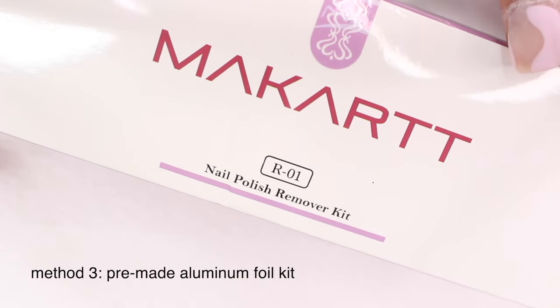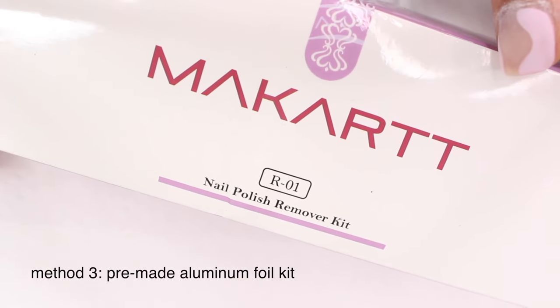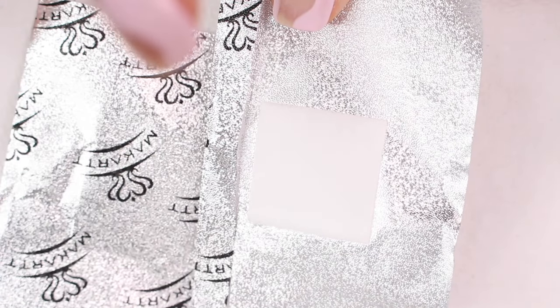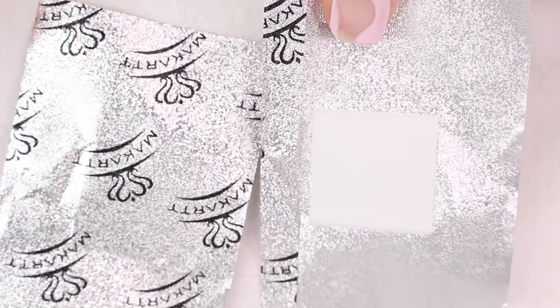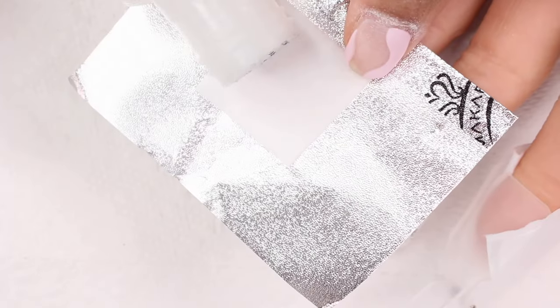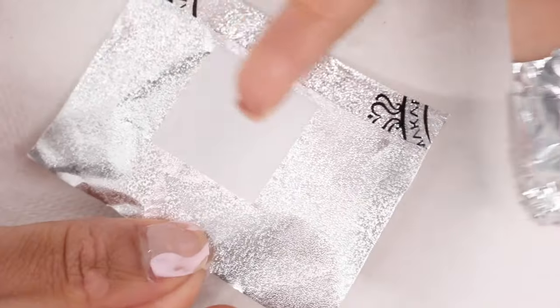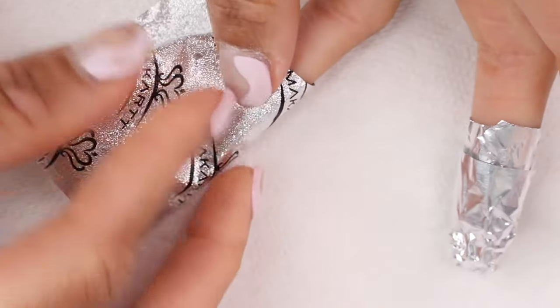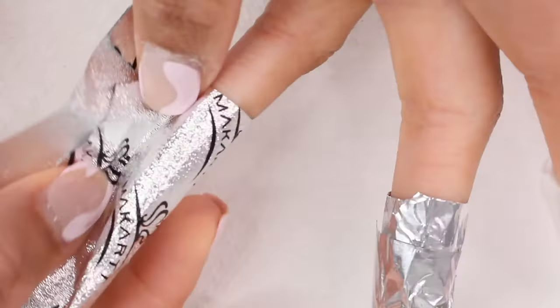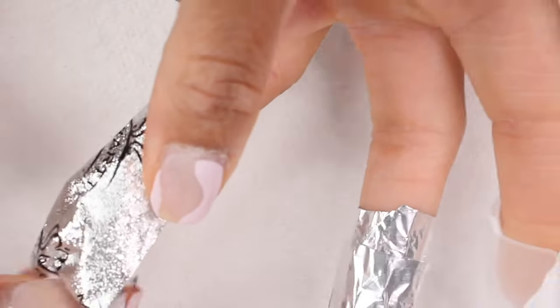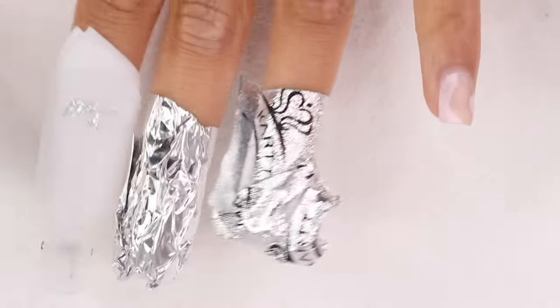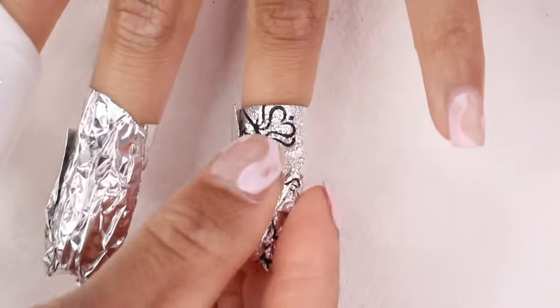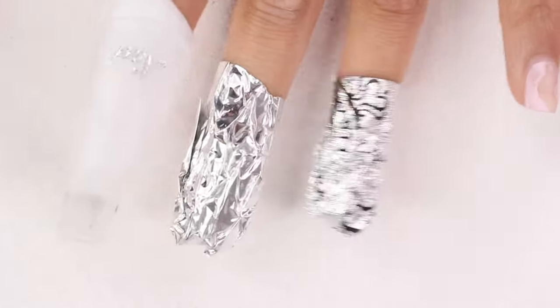The next method is pretty much what I just showed you guys, but it's already done for you. So it just makes the whole process easier. And these are actually new for me. I found them on Amazon, they're from the brand McCart. And basically it's a sheet of aluminum foil and then it has the little cotton pad already attached to it. So all you have to do is add the acetone. And the reason I like these so much is because the foil is actually thicker than normal foil. So I feel like it just works better. It's already made, it just makes your life easier. So if you want to save some time, I would definitely recommend these. I feel like these are going to be my new go-to. So you have that option as well.